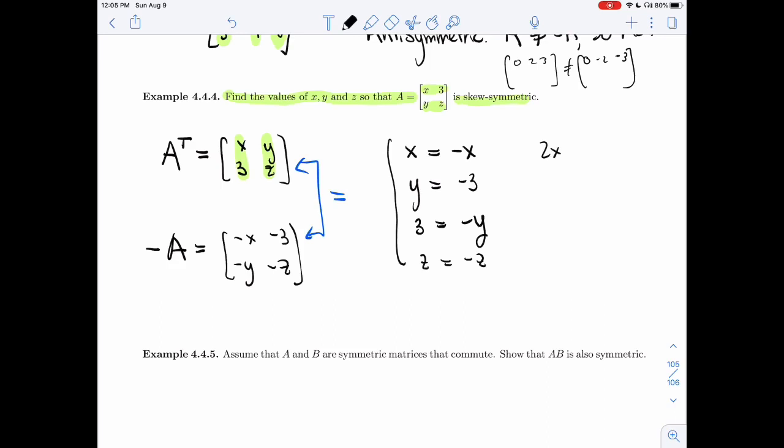So this is 2X is 0, so X is 0. Here Y is minus 3. Here Y is minus 3. And so this one gives me 2Z is 0, so Z itself is 0. So we need X to be 0, Y to be minus 3, and Z to be 0.